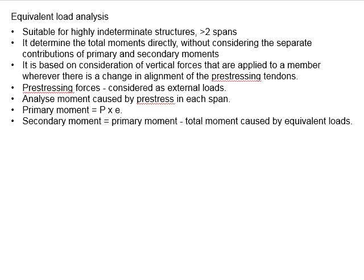As the equivalent load is meant to create a load comparable to the external load in the process of cancelling it out, as long as we can generate a stress profile within the member based on special arrangements of the tendon, we can cancel out the stresses generated by the external load. If the equivalent loads perfectly match the external load, the stress will always be within the allowable limits. This method is therefore suitable and advantageous for highly indeterminate structures with more than two spans.